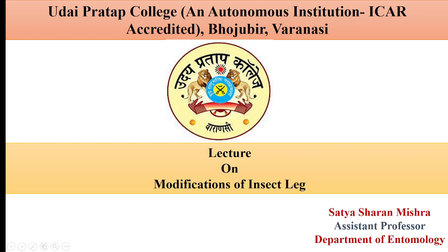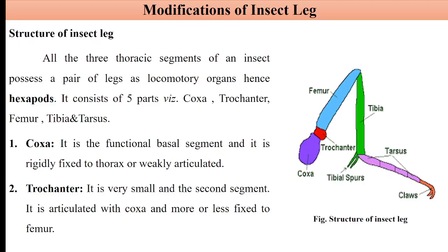Hello everyone, welcome back. In this lecture I am going to discuss about the modification of insect legs. Insects possess three pairs of legs, present on all the thoracic segments — prothorax, mesothorax and metathorax. These legs are the major locomotory organs in insects. Because of three pairs of legs, insects are also known as hexapods or class Hexapoda. In different insects, these legs are modified for different purposes.